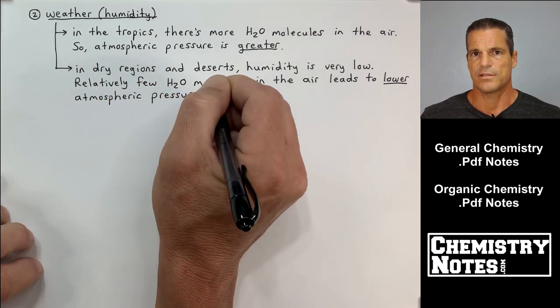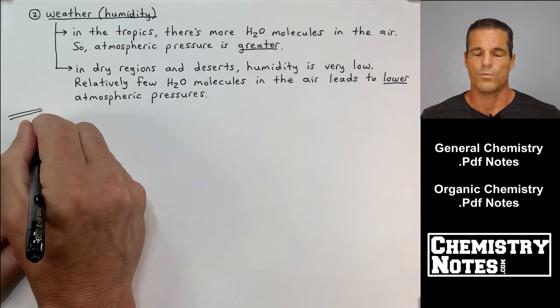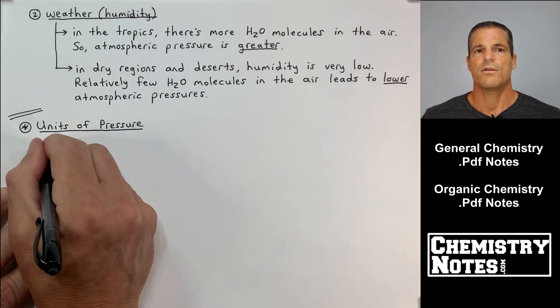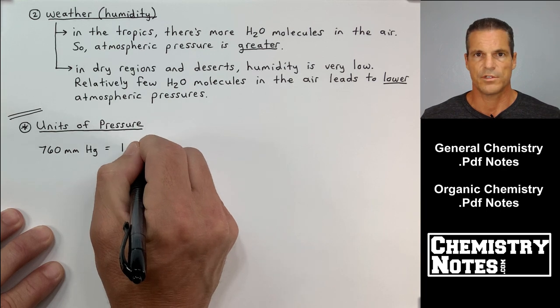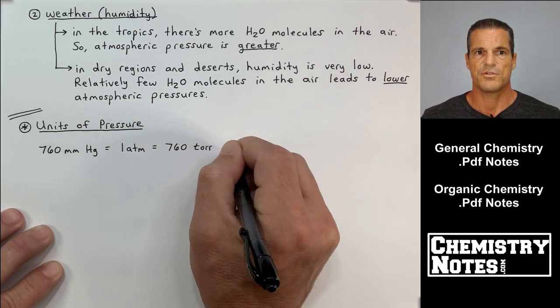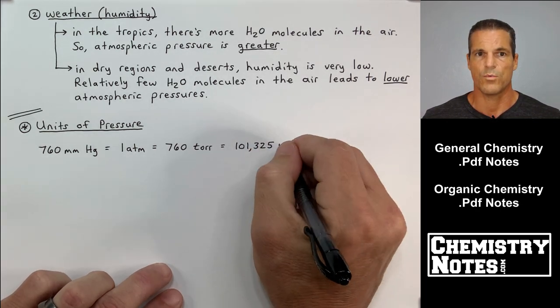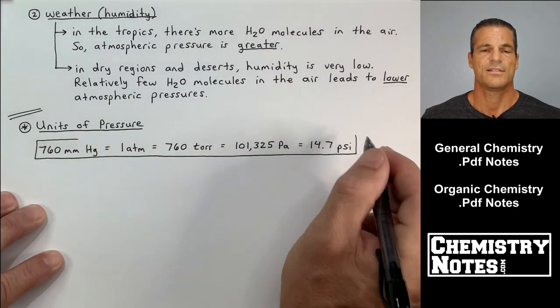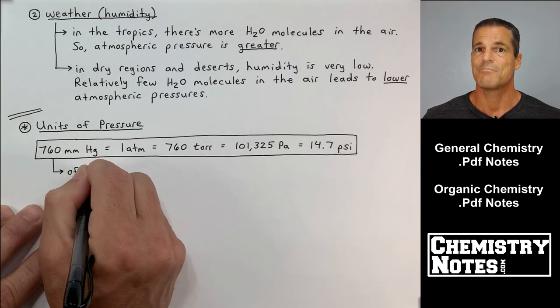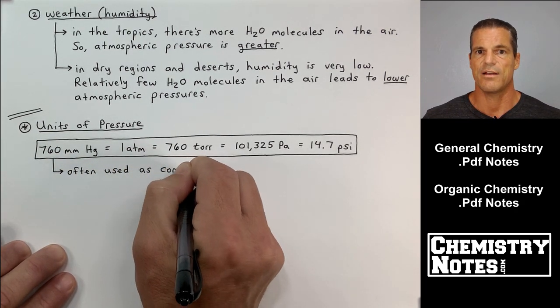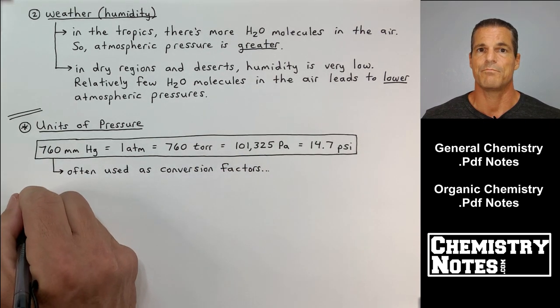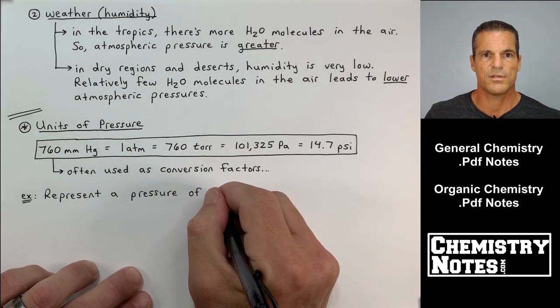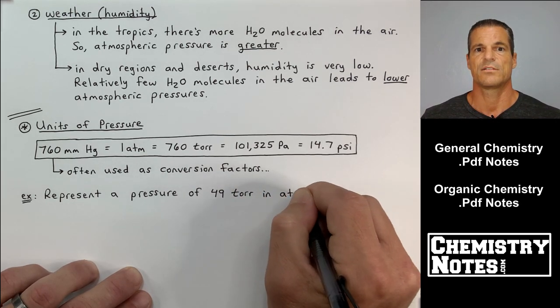The last thing I want to talk about today are units of pressure. Here are all the main units of pressure. 760 millimeters mercury is the same pressure as one atmosphere, is the same as 760 torr, is the same as 101,325 pascals, and that's also equal to 14.7 psi, where psi is pounds per square inch.